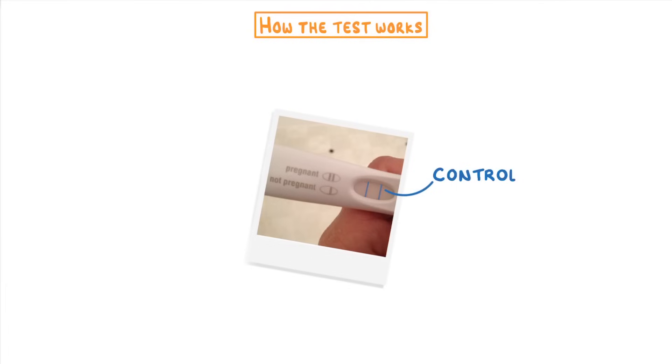Also, we just want to point out that most pregnancy tests in real life actually have two lines rather than one, with the second line acting as a control. So you normally need two lines for a positive result. Just remember that different tests do work differently though, so just be sure to read the instructions before you use any.